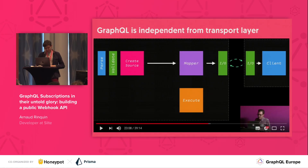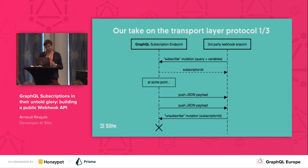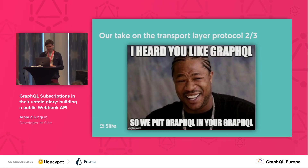The thing is, when we wanted to design our public API, we couldn't find any information or examples of such an implementation. So we had to build our own and made decisions you might argue against. Basically, we put GraphQL into GraphQL — which is a bit weird.